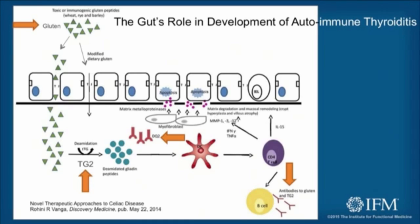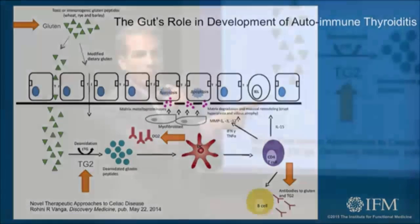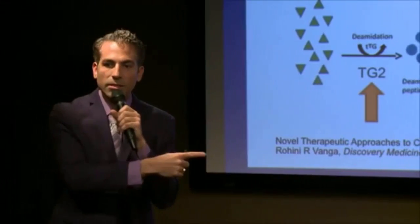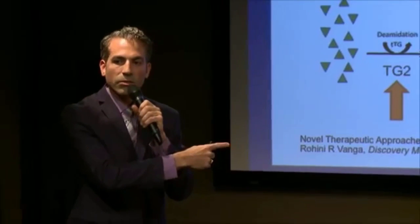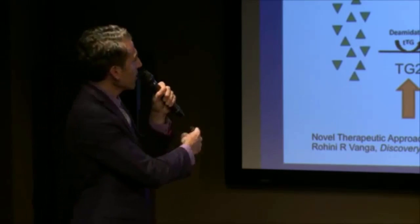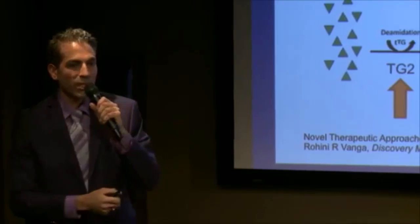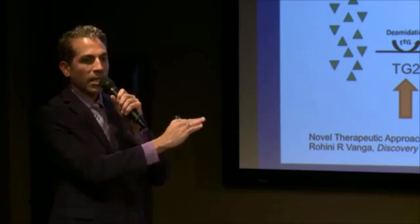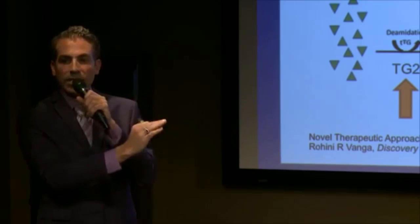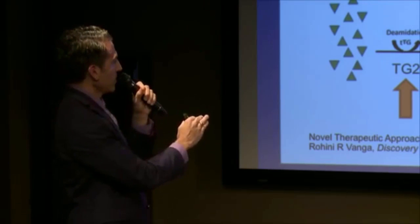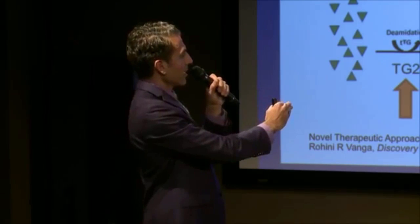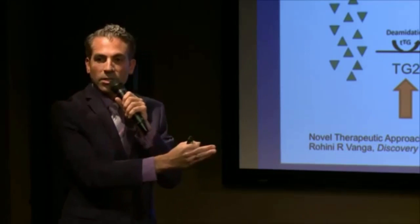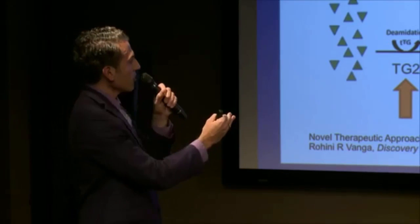Tissue transglutaminase 2 digests the gluten and creates deaminated gliadin peptides. Now imagine a patient who tested positive for HLA-DQ-2 or DQ-8 — they have the ability to identify this gliadin peptide as an antigen, as not self.